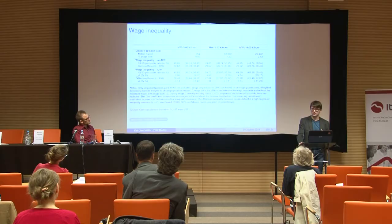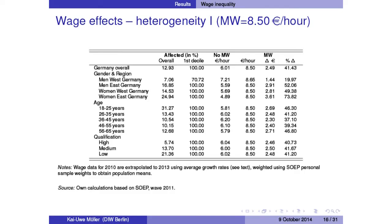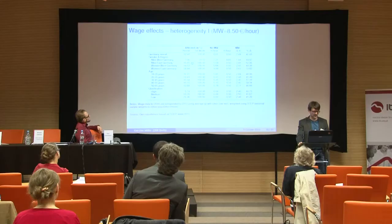The first finding is: based on assumptions of full compliance and full coverage, there's a significant impact on the wage distribution for a minimum wage of €8.50. Besides overall inequality, there's clearly heterogeneity in the effects on wages — the usual well-known facts. For Germany, there's a much higher impact in East Germany compared to the West, and for women compared to men, in terms of both the number affected and the relative increase in wages.